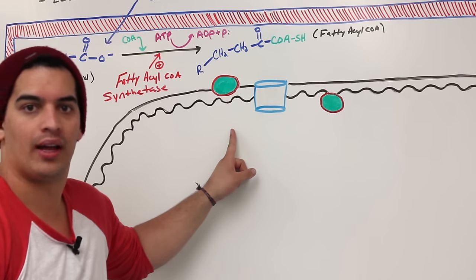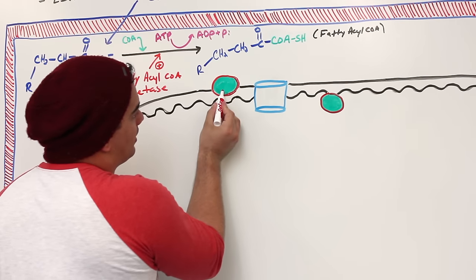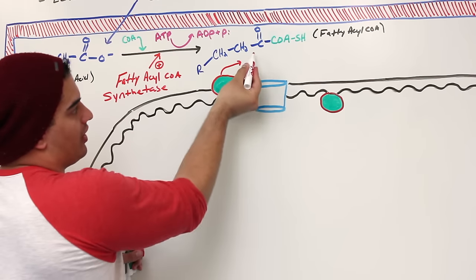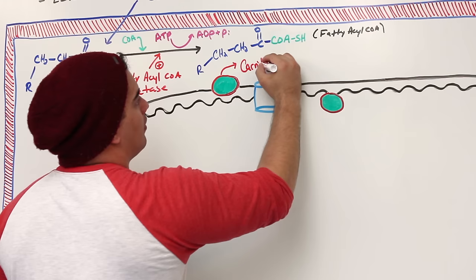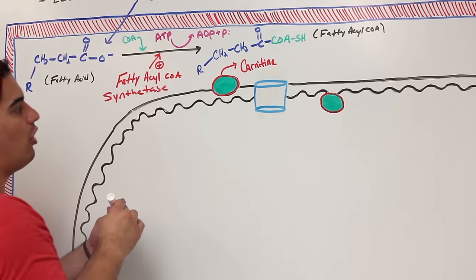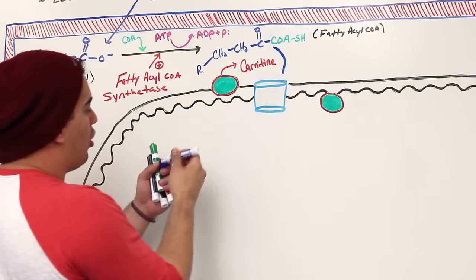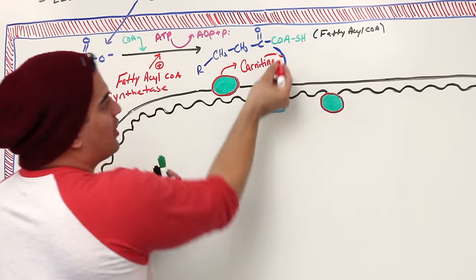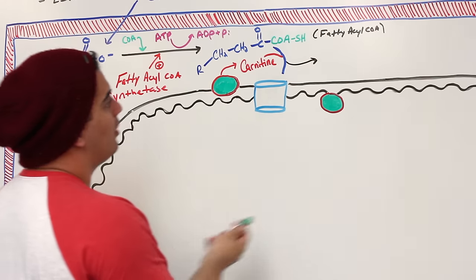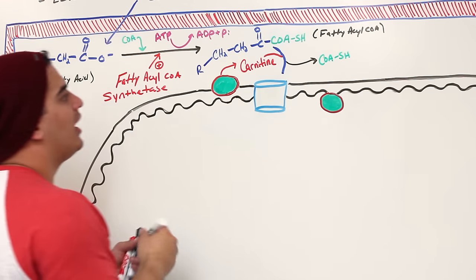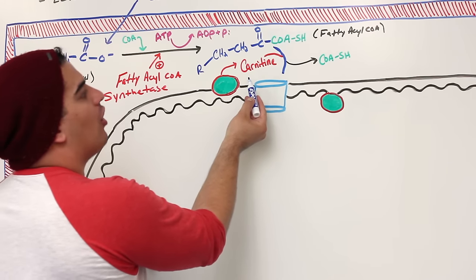To get this fatty acyl CoA into the mitochondria, a special transporter adds on a molecule called carnitine. The fatty acyl CoA combines with carnitine, and in doing so, gets rid of the CoA. So we release the coenzyme A and add in the carnitine, forming a molecule called fatty acyl carnitine.